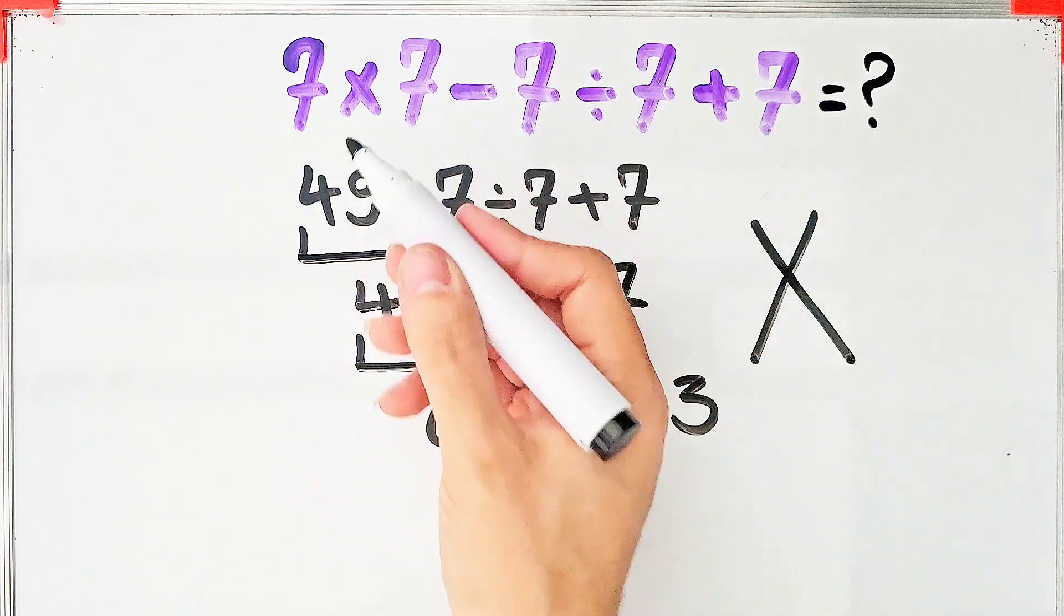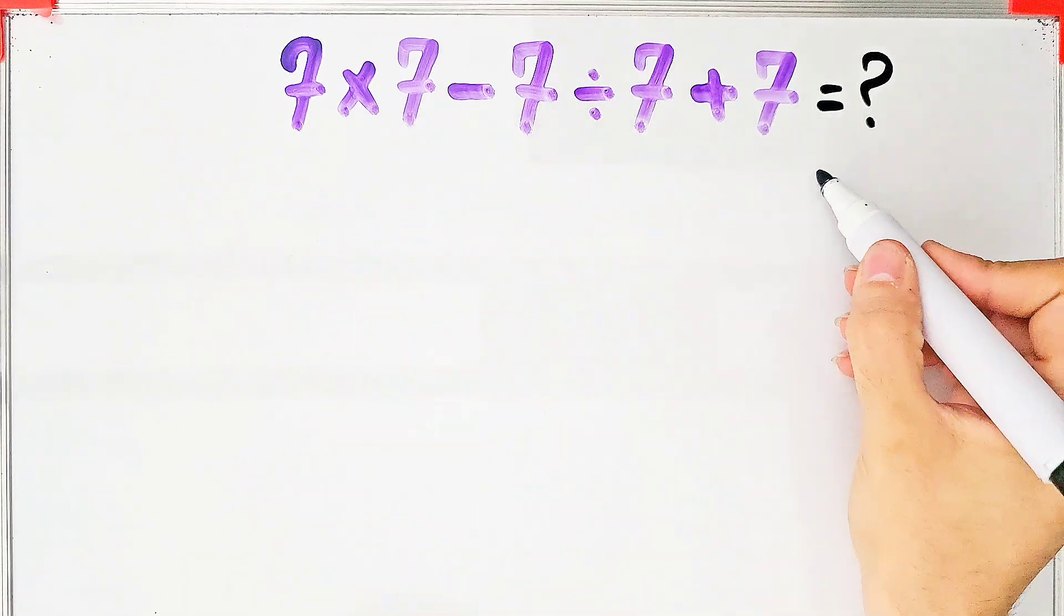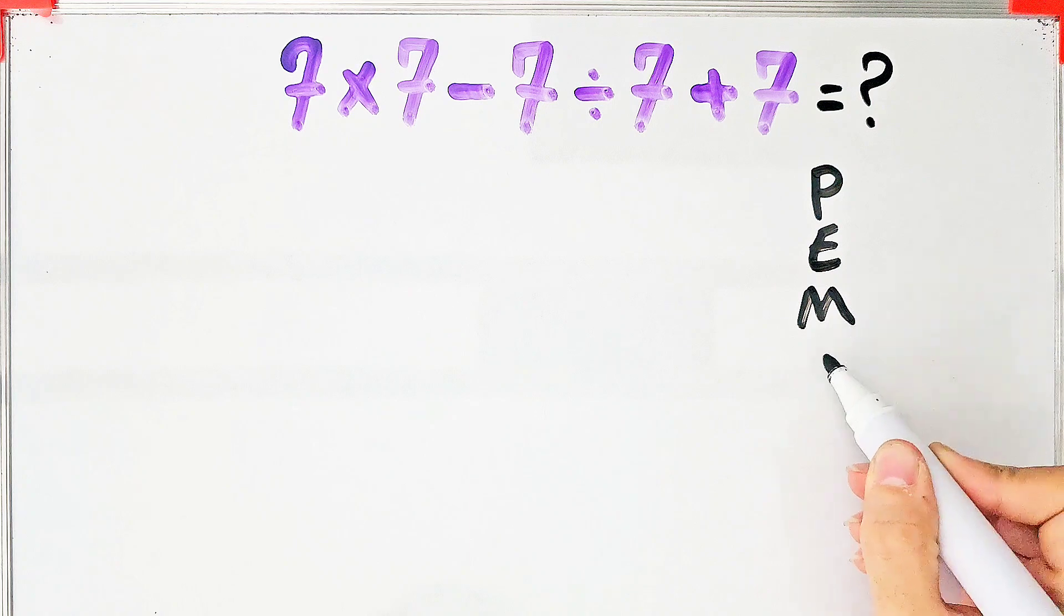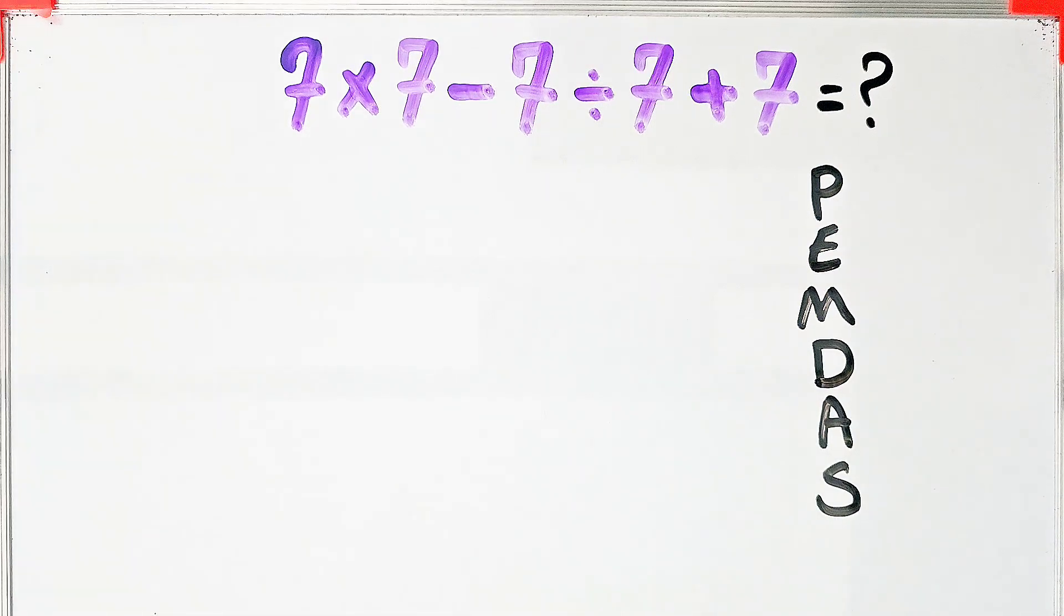To solve this question, we need to follow the order of operations, which is PEMDAS. PEMDAS shows the priority of the mathematical operations. If you don't pay attention to this rule, you get the wrong answer.